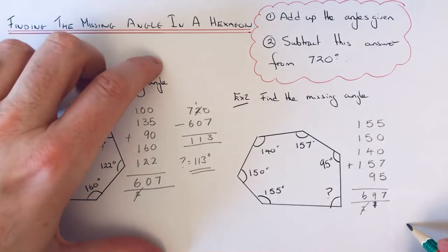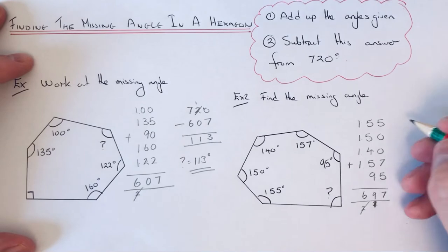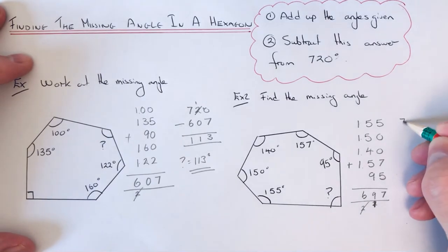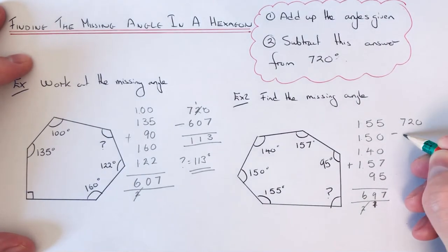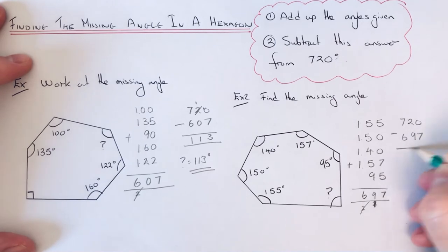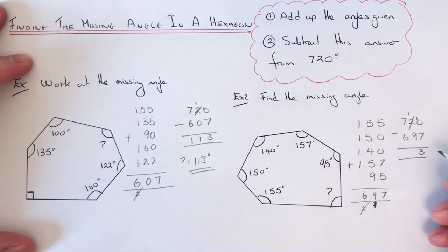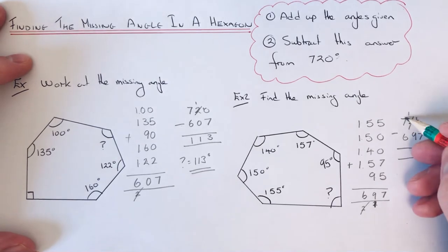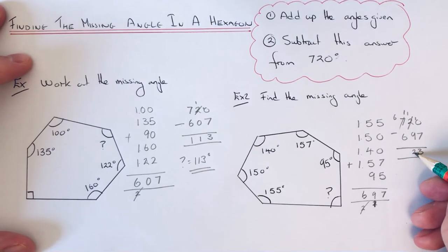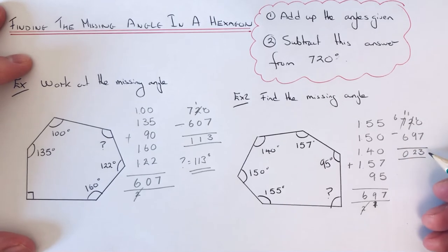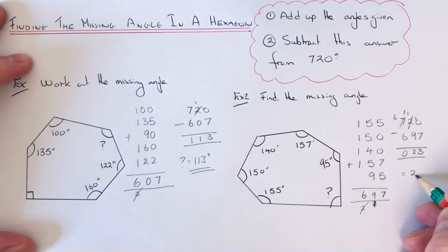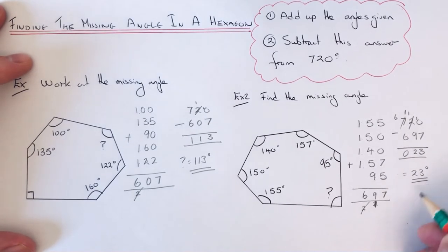If we subtract this away from 720 again, that gives 3 and 2 and 0. So our answer is 23 degrees.